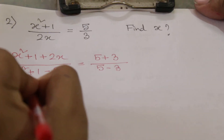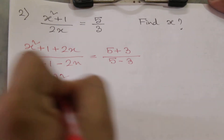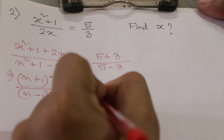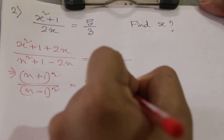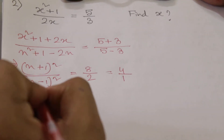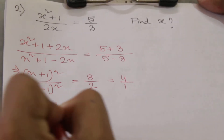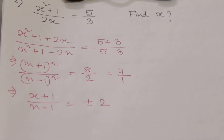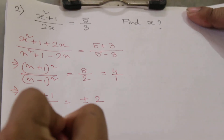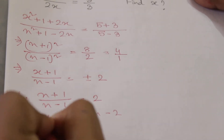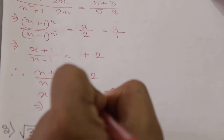The left-hand side becomes (x + 1)²/(x - 1)², and the right-hand side becomes 8/2, which equals 4/1. Now if we take the square root of both sides, √4 = ±2. Taking the positive value: (x + 1)/(x - 1) = 2, so x + 1 = 2x - 2, giving x = 3.